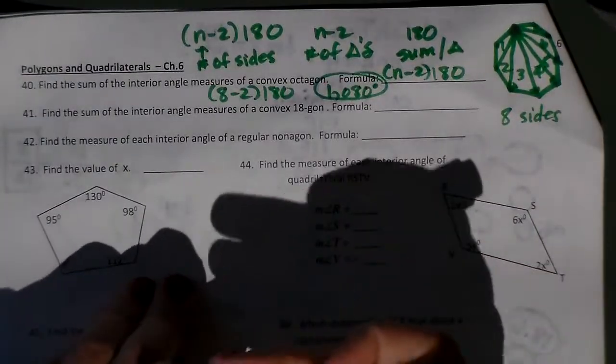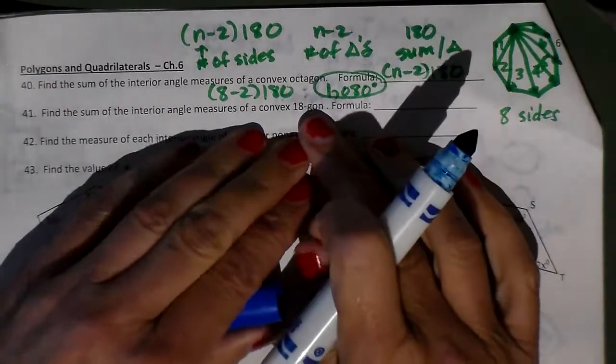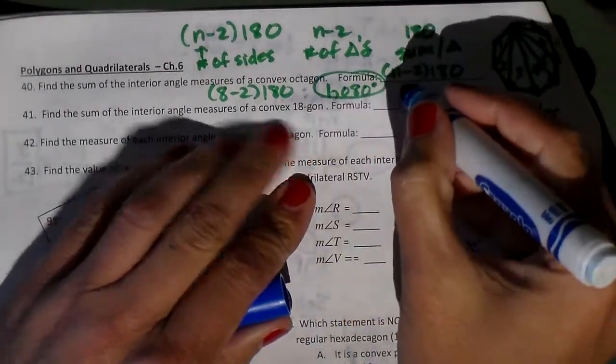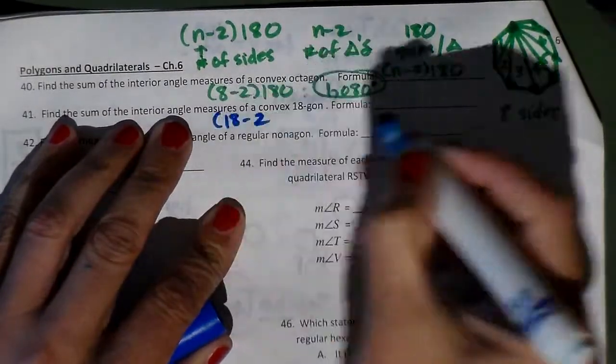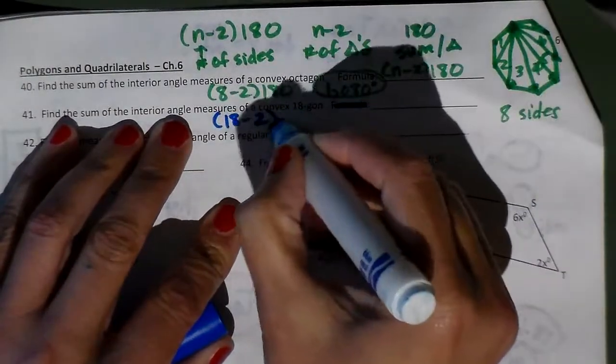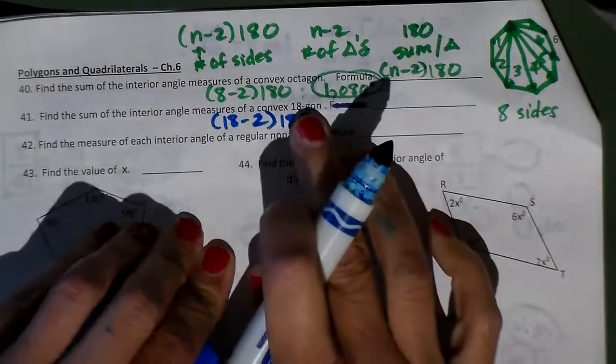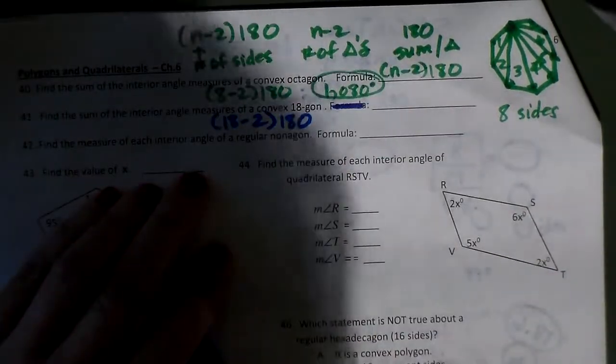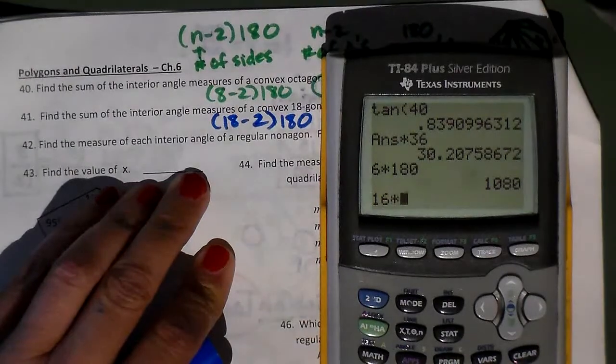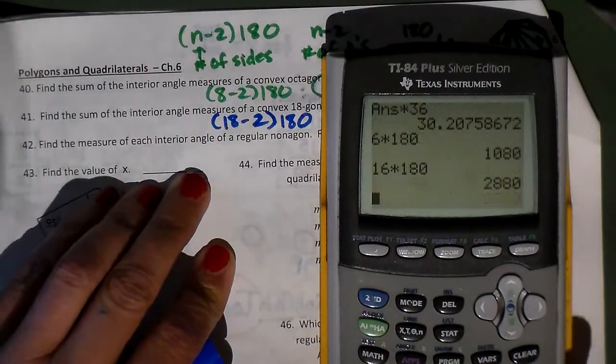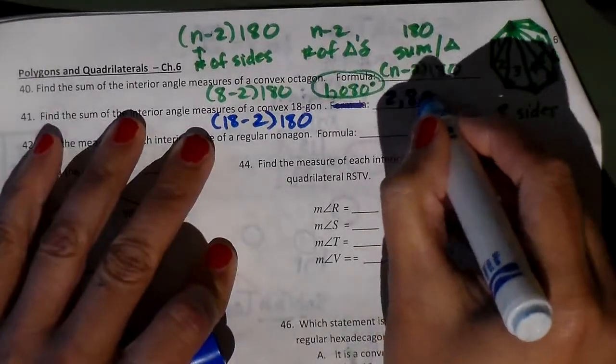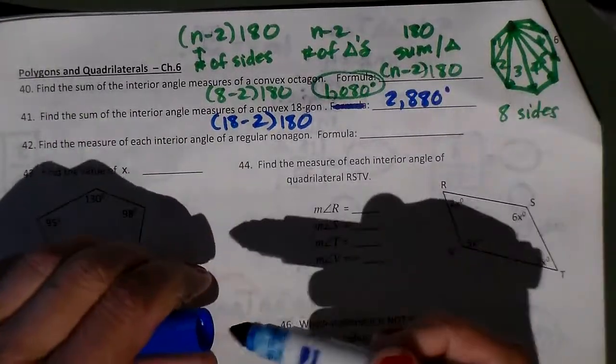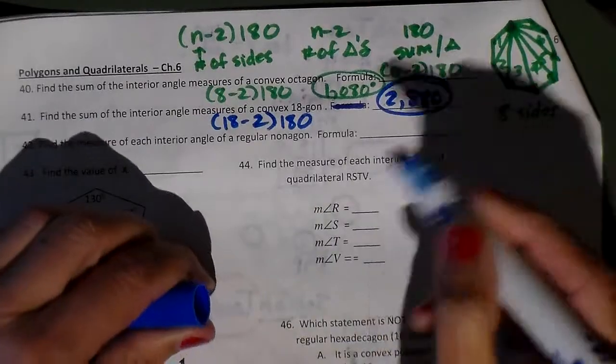Let's look at the next one. 18-gon. Well, again, it's n minus 2 times 180. So I'm going to do 18 minus 2 times 180. If it's got 18 sides, I can divide it into 16 triangles, and that's the n minus 2 portion. That's 2,880. So an 18-gon has 2,880 degrees in its interior.